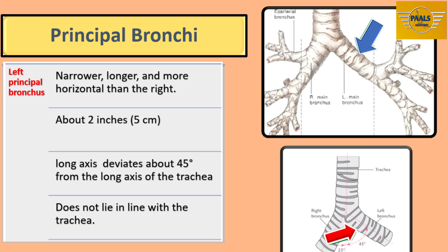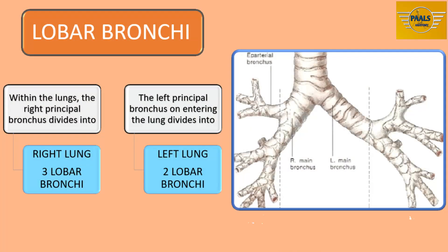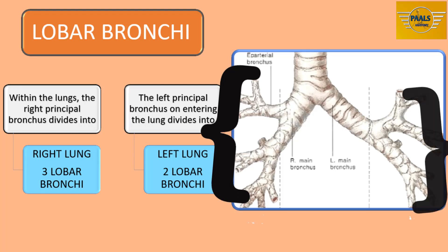We will proceed to the next level of branches: the lobar bronchi. Within the lungs, the right principal bronchus divides into three lobar bronchi, one for each lobe of the right lung. The left principal bronchus divides into two lobar bronchi, one for each lobe of the left lung.